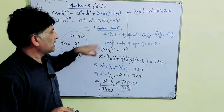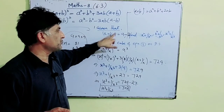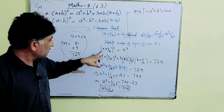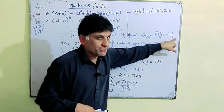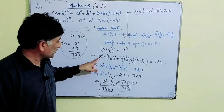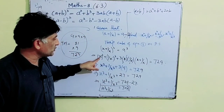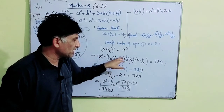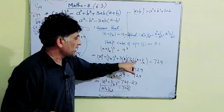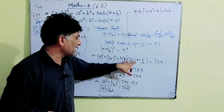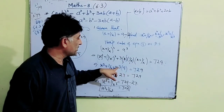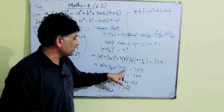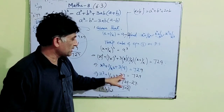Now, if you have the question x - 1/x = 9, you can find x³ - 1/x³. Using (a - b)³: x³ - 1/x³ - 3 × x × (1/x) × (x - 1/x). Putting the value x - 1/x = 9, and noting minus × minus = plus, we get x³ - 1/x³ + 27 = 729.